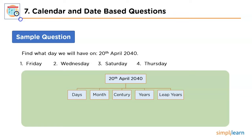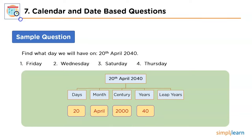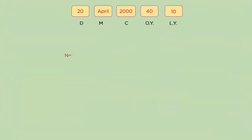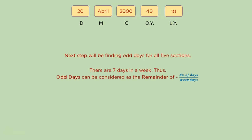The date value is 20, the month is April, the century is 2000, the ordinary year is 40, and the leap year is 40 ÷ 4 = 10. For odd days from the date section: the remainder of 20 ÷ 7 is 6. For month and century, we use predefined odd day values — April has an odd day value of 6 and the century 2000 has an odd day value of −1 (or its predefined equivalent).